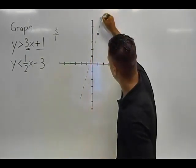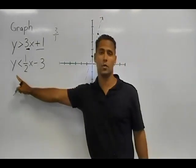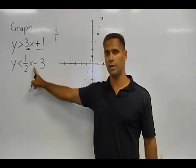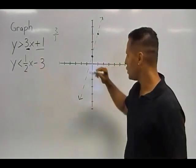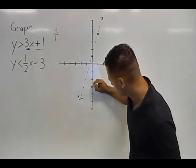So once you make a dotted line, we are going to graph our second inequality which is y is less than one half x minus 3. And where it crosses the y axis is at negative 3. So let's find negative 3 on the y axis which is negative 1, 2, 3 right here.